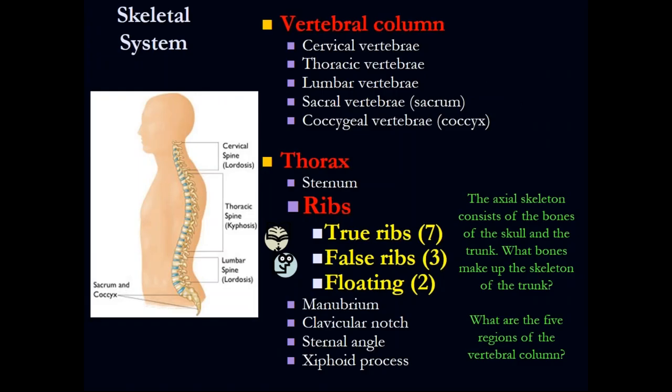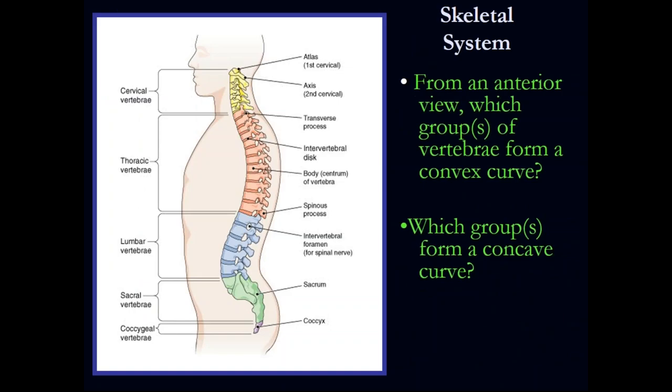Let's focus on the vertebrae and ribs. We have true ribs, false ribs, and floating ribs. Posteriorly, all 12 ribs are related to the thoracic vertebrae. Anteriorly they relate to the sternum. Ribs one through seven are true ribs. Ribs eight, nine, and ten are false ribs. Ribs eleven and twelve are the floating ribs.